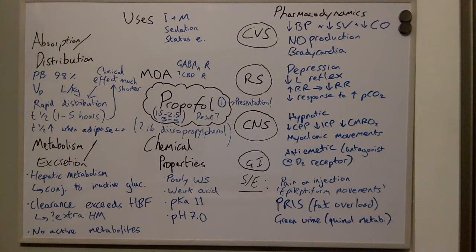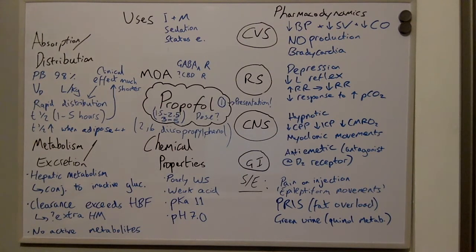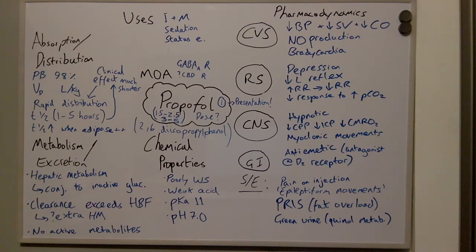The dose of propofol is 1.5–2.5 mg per kg for adults and 3–5 mg per kg for children. The mechanism of action: propofol potentiates GABA-A receptors. In addition to this, it may have some activity at cannabinoid receptors. Its uses include the induction and maintenance of anaesthesia, sedation, and treatment of status epilepticus.